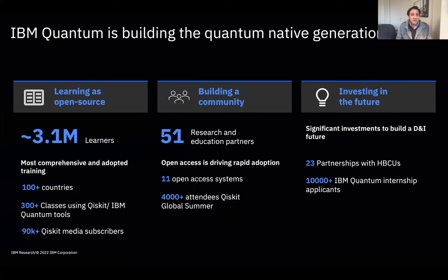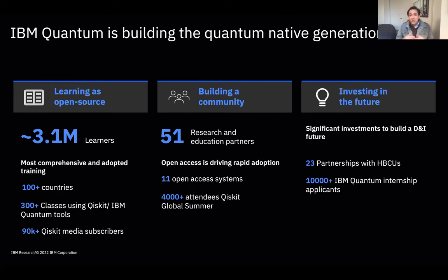An incredibly exciting area is the quantum-native generation being trained to think about computation in a totally different fashion. We've committed to open access — half of our quantum fleet is open and free for anyone to learn and use. Over 3 million learners have participated in our online courses across 100-plus countries. Over 50 research institutions are developing curriculum using this technology, and we have partnerships with 23 HBCUs in the United States. In our quantum summer program, we typically have about 60 slots and over the last couple of years have received over 10,000 applicants.